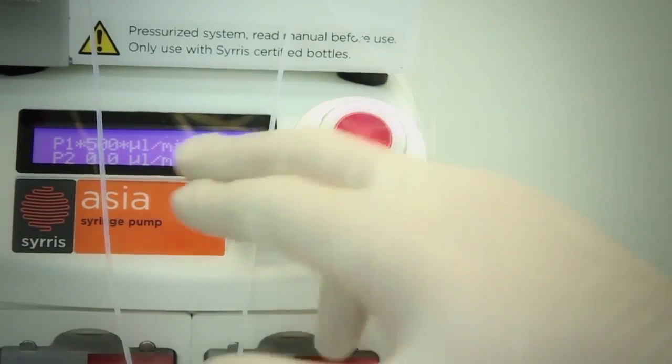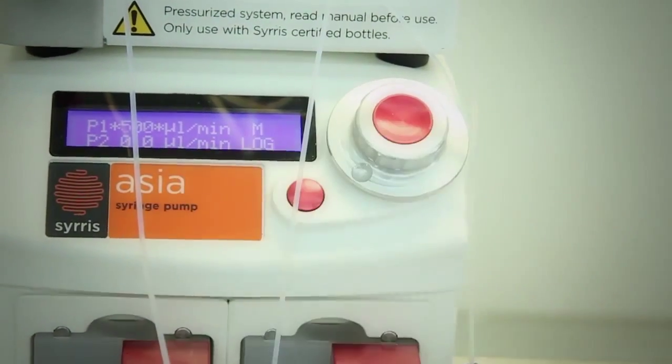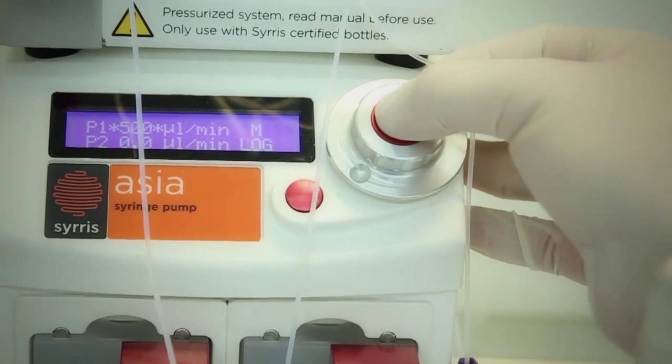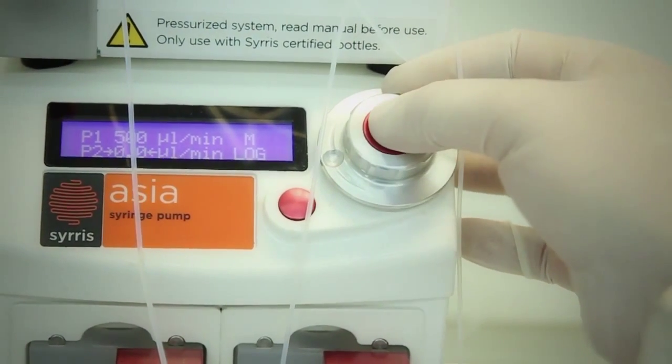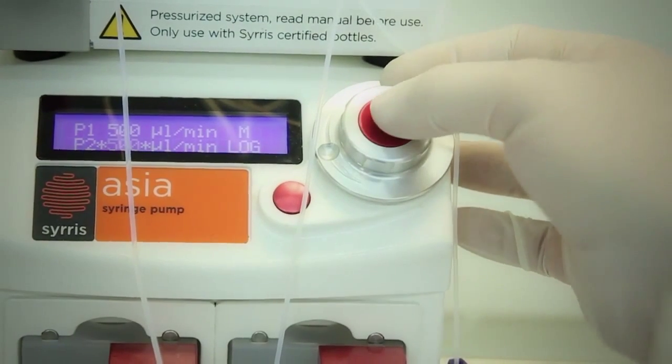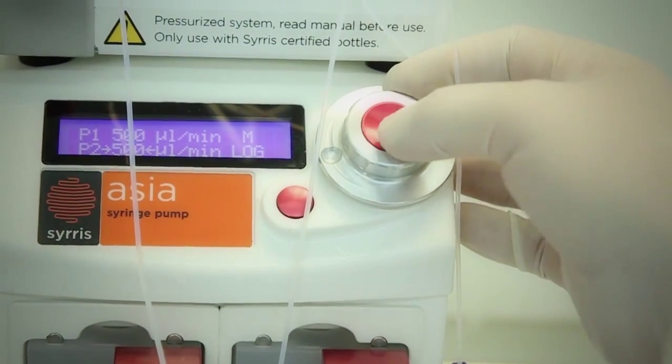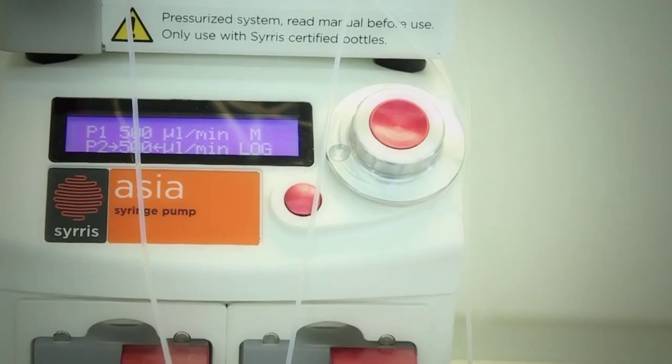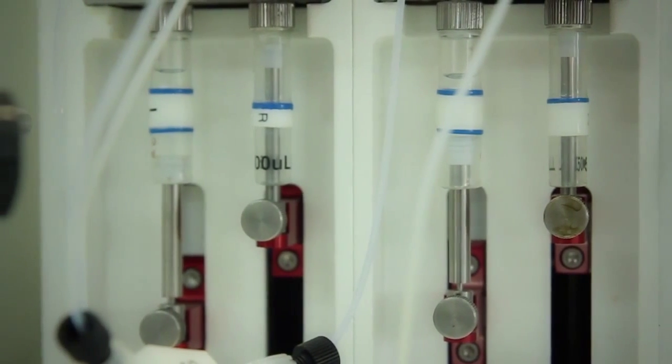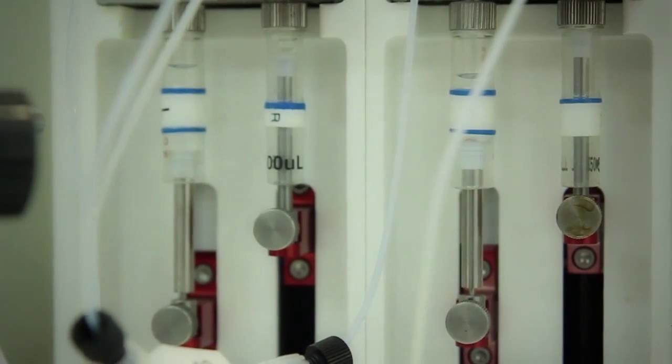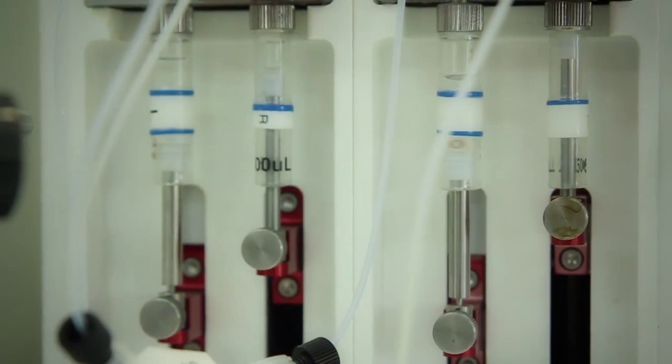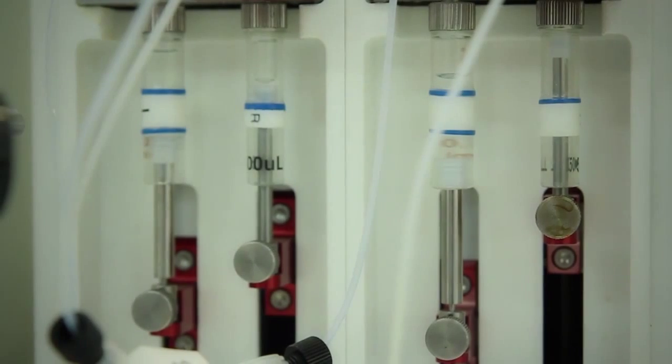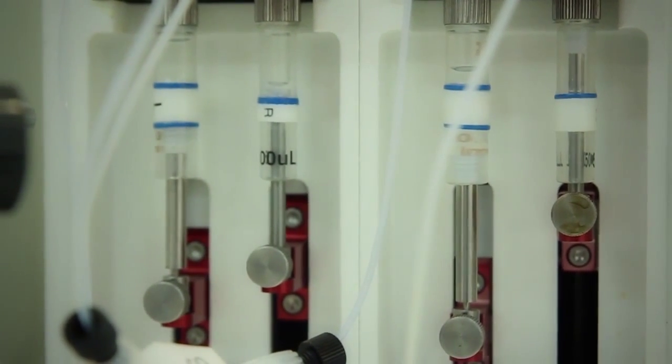So we are going to set the flow to one milliliter per minute in total at the beginning, just for passing the solvent fastly and equilibrating the system. Because at this stage, we don't really mind which is the flow. Now the system is just filling the syringes. They are syringe pumps. It's just filling them with the solvent. And then, once both syringes in both pumps are full, it will start pumping.